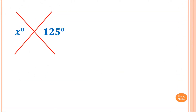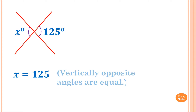Example 1: Find the value of X. This angle here is equal to this angle, so X is equal to 125. We must give a reason — the reason is vertically opposite angles are equal.